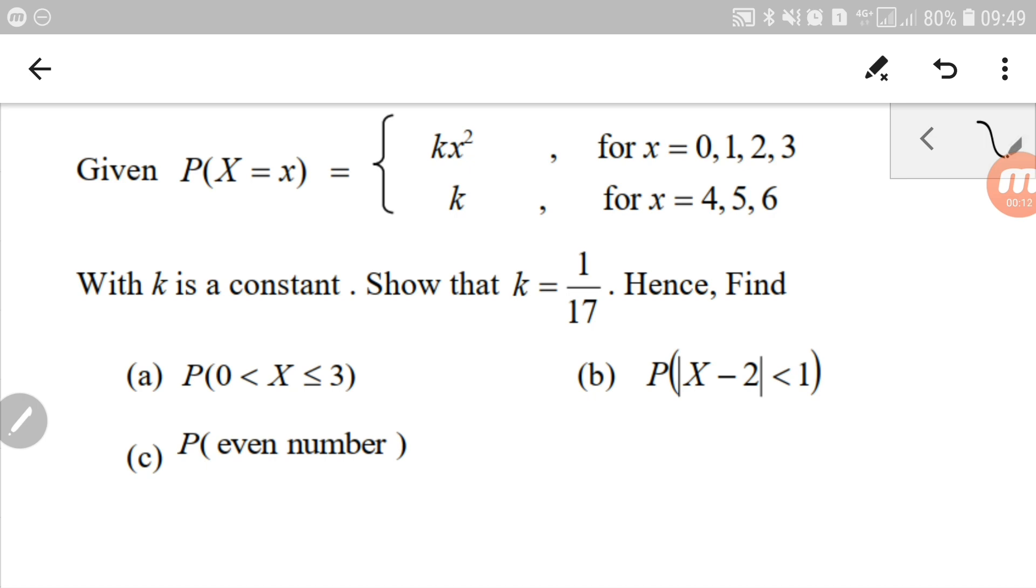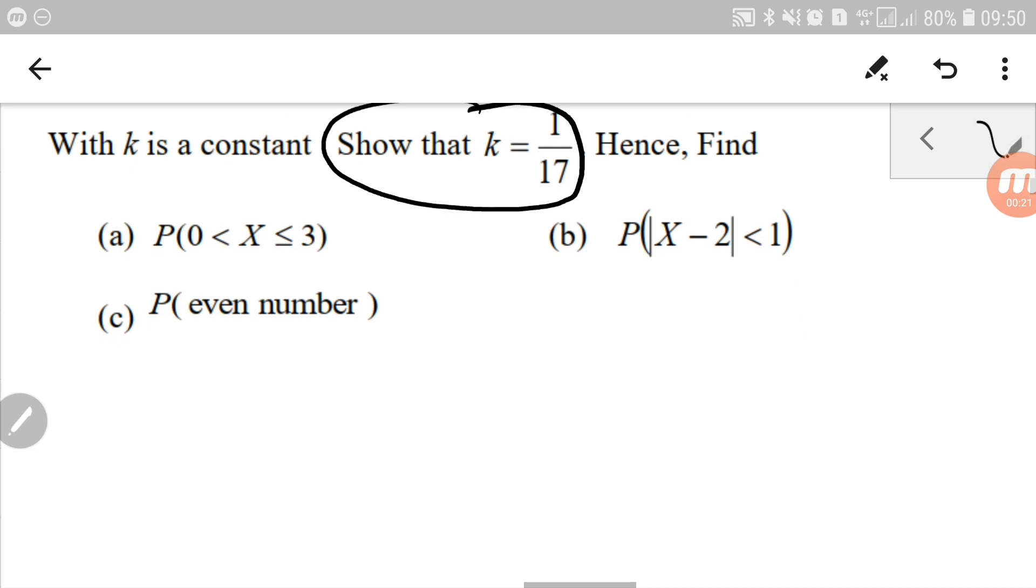So the first part of the question is asking how to show that k is 1 over 17. As we all know, for probability distribution function to be valid,